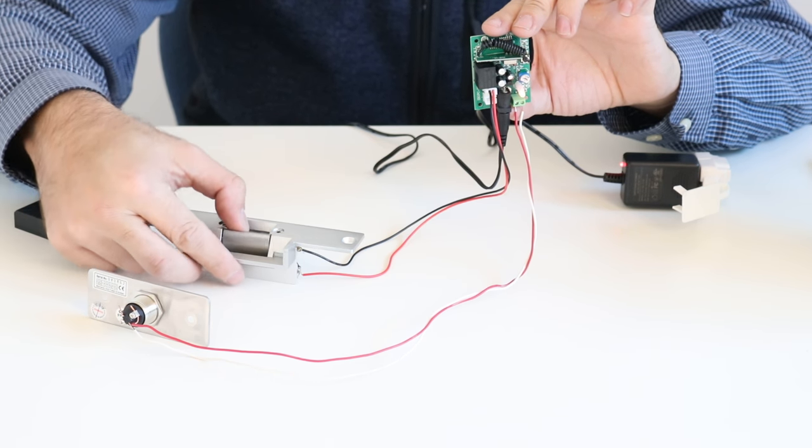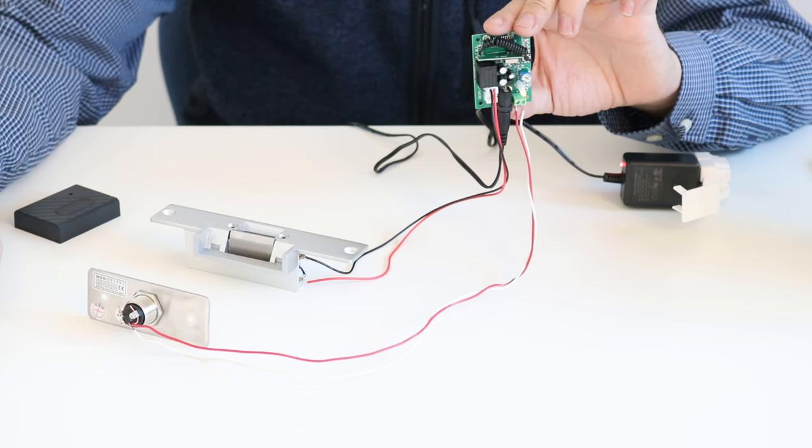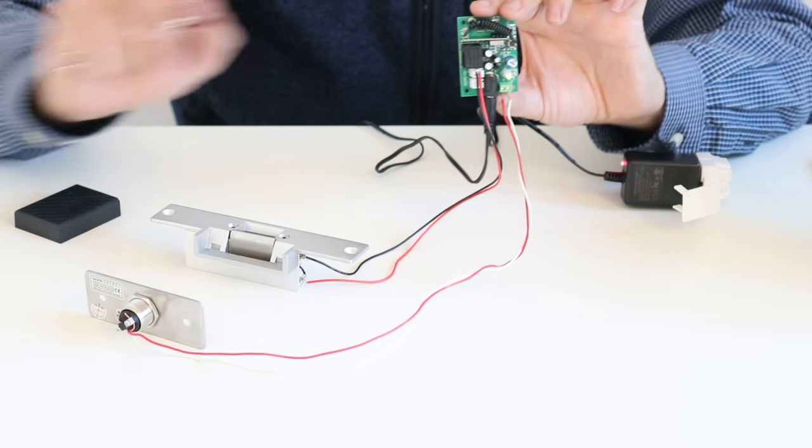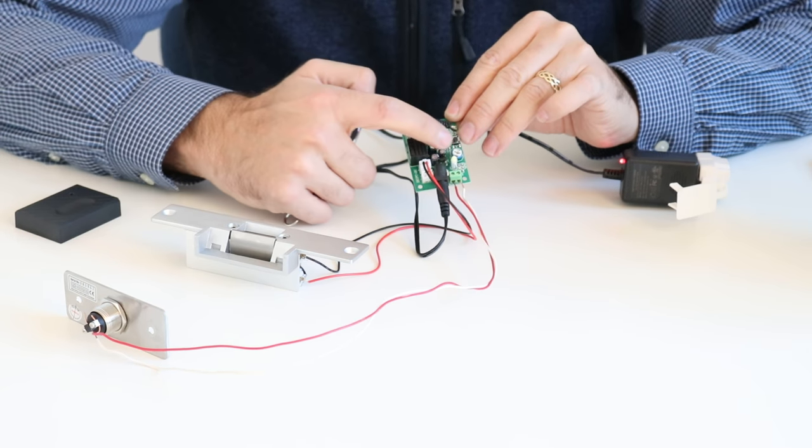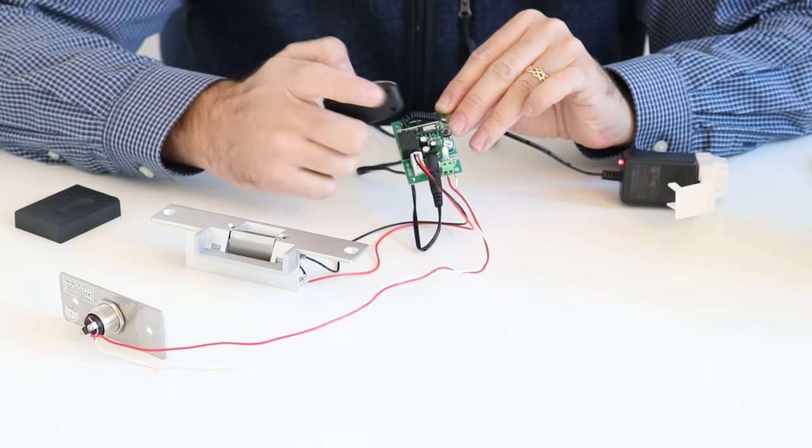I press the unlock button, and the lock is unlocked. I've got this set on a 10-second timer, and you can actually adjust this delay of how long the lock is going to be open.